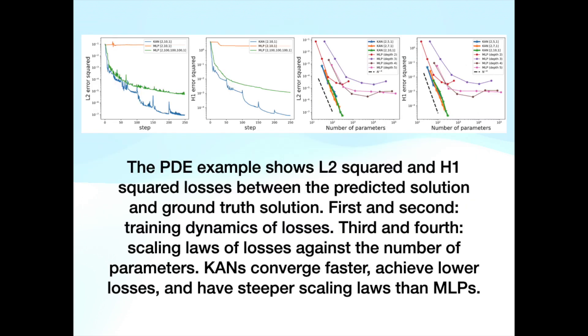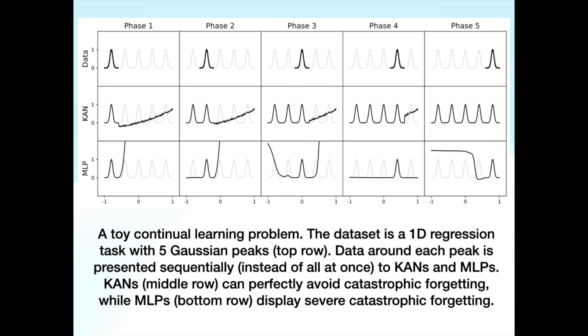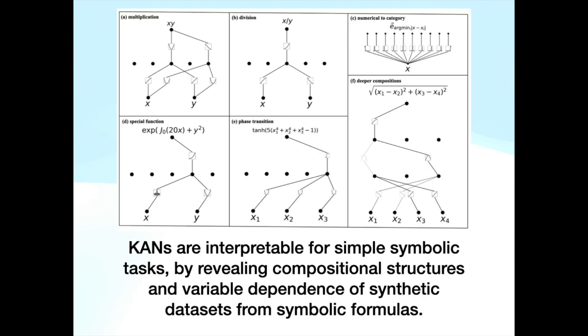The PDE example shows that KANs converge faster, achieve lower losses, and have steeper scaling laws than MLPs. On a toy continual learning problem, KANs can perfectly avoid catastrophic forgetting, while MLPs display severe catastrophic forgetting.